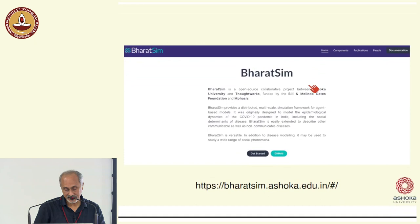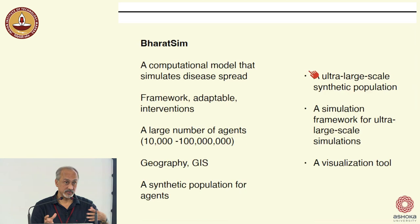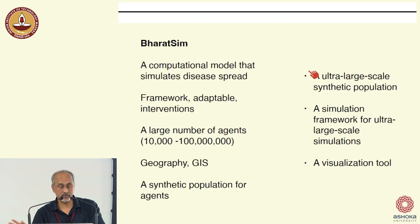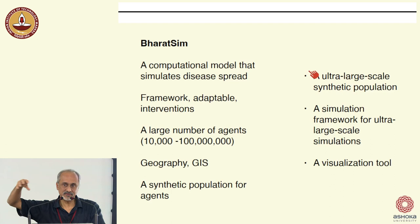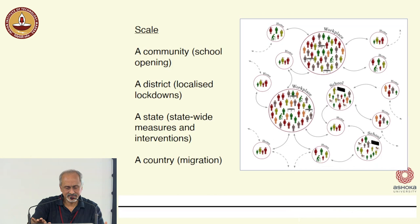This is a project called BharatSim, supported by the Gates Foundation and by Mphasis. The website is publicly available. It's a computational framework that simulates disease spread — adaptable, not a static piece of code. You can implement multiple interventions. It's designed to work with a large number of agents, from about 100 or 1,000 all the way to 20 to 50 million. It can incorporate geography and a geographical information system. The India-specific part goes into the synthetic population for the agents, which includes all Indian information obtained from multiple databases and synthesized. The framework contains an ultra-large-scale synthetic population, a simulation framework, and a visualization tool.